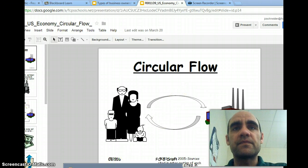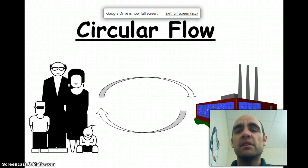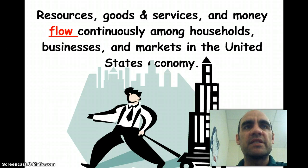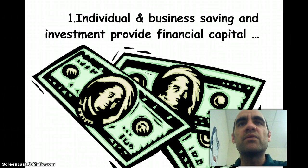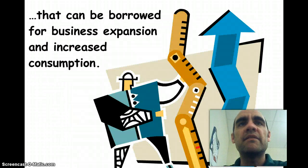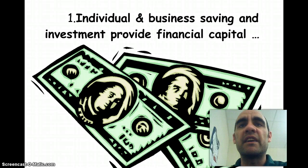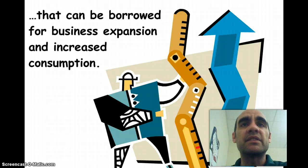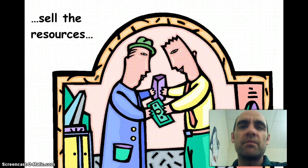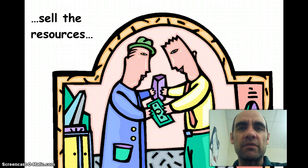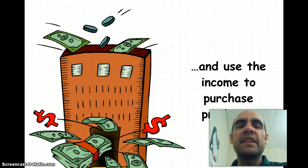Let's do Circular Flow. Circular Flow is how resources, supplies, and goods move about in a free market. Specifically, we're talking about three types of participants: individuals, businesses, and the government. Individuals, through saving and investing, provide financial capital that businesses borrow to expand and increase consumption. All households own resources, and the resource every household has is human resources. When you start a job, you're really selling yourself to that company — you're a resource. The company gives you a salary for that resource, and then you use that money to purchase products from companies that make products.